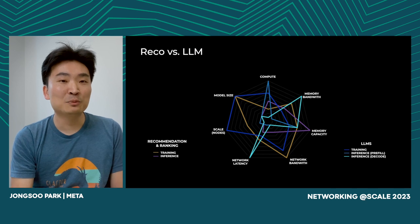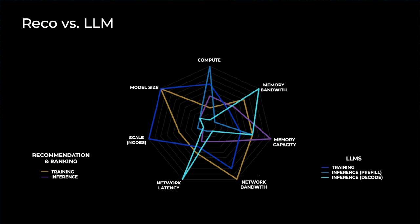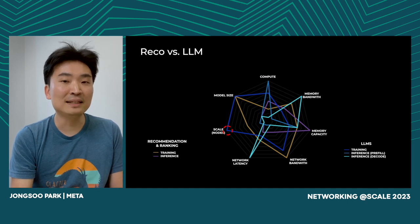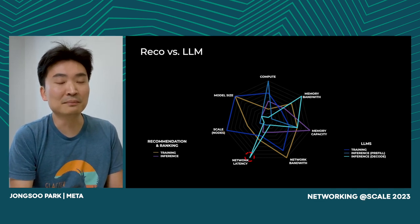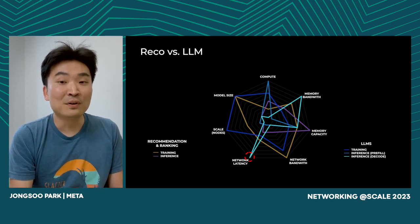What do GenAI and specifically large language models mean for system design, especially for the network subsystems? Recommendation models have been the primary AI workloads in Meta's data center, but large language models have very different characteristics. First, LLM training and inference both require much more compute, which means we need a huge number of accelerators to finish training in a reasonable amount of time. This creates a very interesting problem for the network subsystem. Even within LLM inference, it has very diverse characteristics.